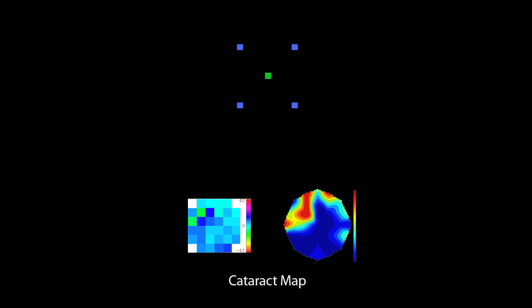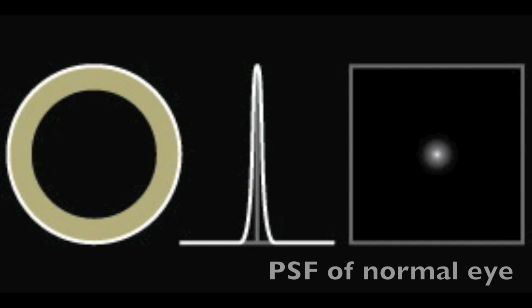This information is collected by the device, creating an attenuation map of the entire lens. This allows individuals to monitor the progression of the severity of the cataract.